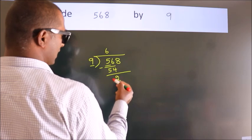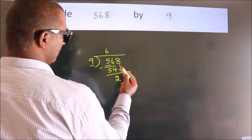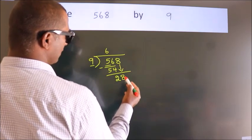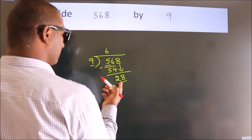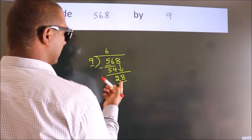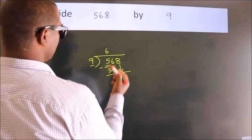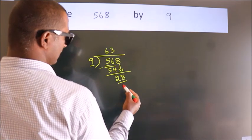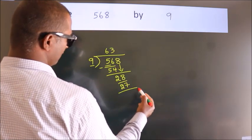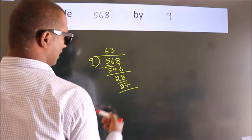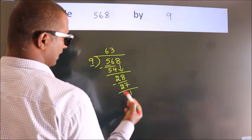After 56, bring down the beside number. So, bring 8 down — that gives us 28. A number close to 28 in the 9 times table is 9 threes, 27. Now we subtract and we get 1.